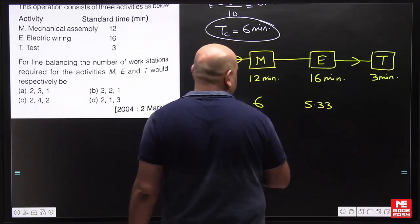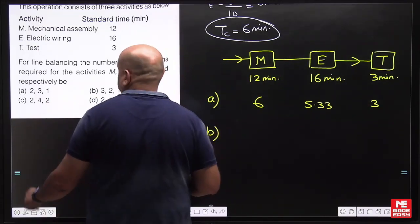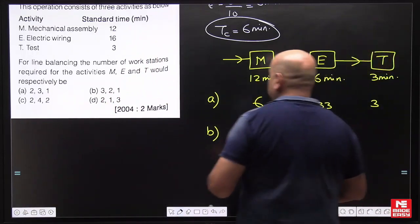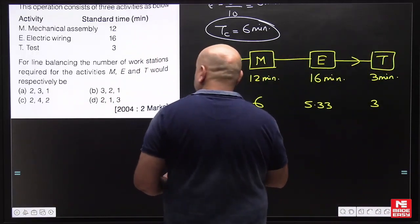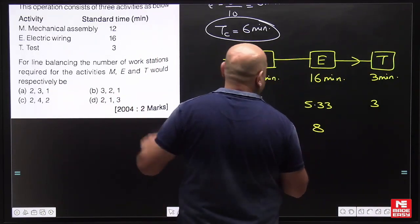Option B is 3, 2, 1. Now 3 stations of mechanical assembly: 12 divided by 3 is 4 minutes. Every one unit will pass on after 4 minutes. 2 stations for electrical: 16 divided by 2 is 8 minutes. And 1 for testing will be 3 minutes.